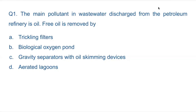Question number 1: The main pollutant in wastewater discharge from the petroleum refinery is oil. Free oil is removed by — so when the main pollutant in wastewater discharge from petroleum refinery is oil, how does it remove the oil? Free oil means the oil is floating on the water.